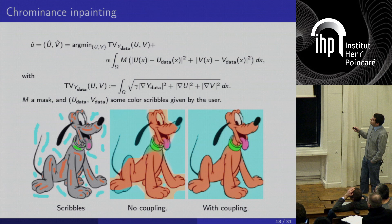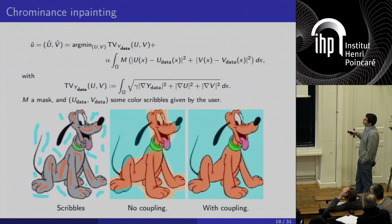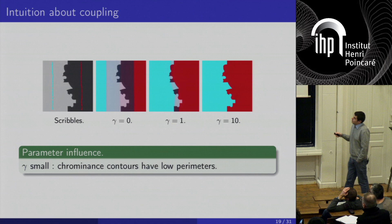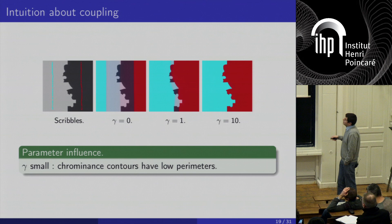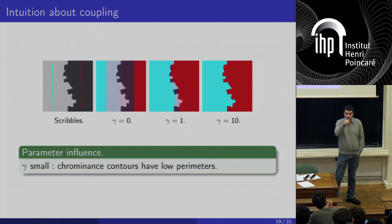What is the gamma parameter's influence? If gamma is very high, you have good fitting. With no coupling, it doesn't fit well. With gamma equal to one, it is a trade-off between best fitting and lowest perimeter — useful in practice, for example for colorization of JPEG images where there can be block effects and false edges, fitting better with a mid-range parameter.